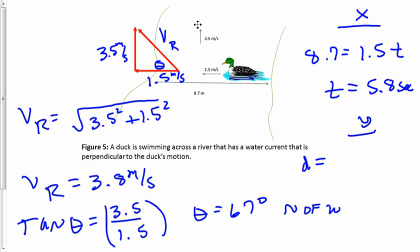Now I'm going to use the y velocity, 3.5, and multiply that by 5.8 seconds. And the displacement the duck goes in the y direction is going to be 20 meters.